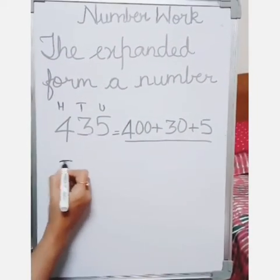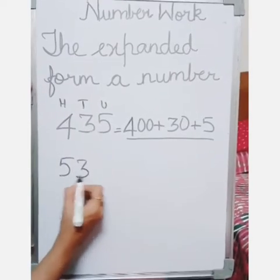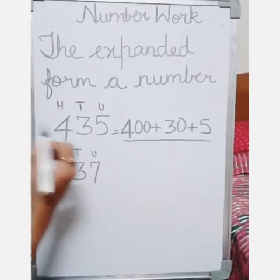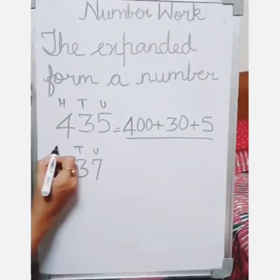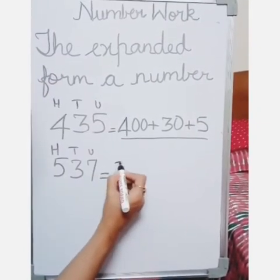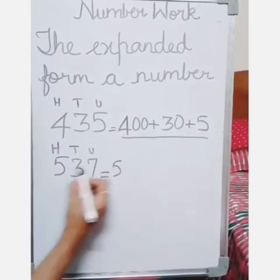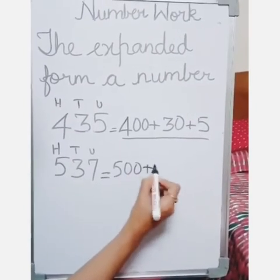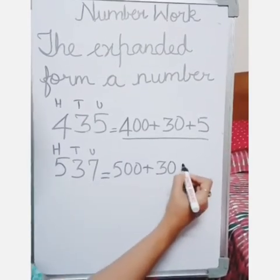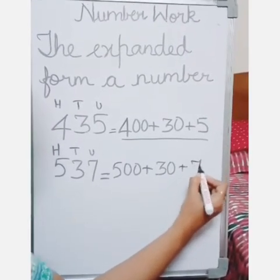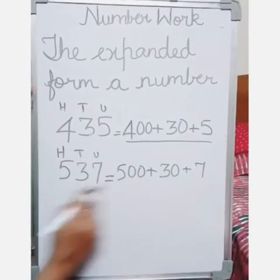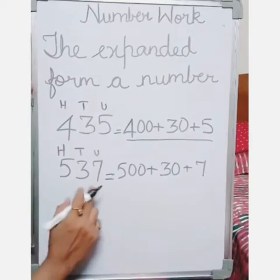Let's take another example: 537. What is there in the units place? It is 7. Tens place, it is 3. And hundreds place, it is 5. So the method to write this: in the hundreds place, 5, so it is 500. Next place, 3 tens means 30. And in the units place, it is 7. So this is the method to write the expanded form of 537.